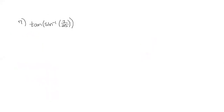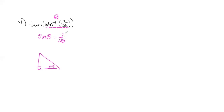Number 7: tan of sine inverse of 7/25. Working inside out, sine inverse of 7/25 means sine of some angle theta equals 7/25. I replace the inverse expression with theta and need to find tan of theta. Drawing a right triangle with angle theta: the opposite side is 7 and the hypotenuse is 25. This is a Pythagorean triplet, so the adjacent side is 24. Tan is opposite over adjacent, so tan theta equals 7/24.